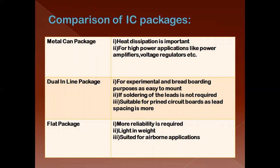Coming to the comparison of IC packages — the metal can package is preferred whenever heat dissipation is important, such as for high power applications like power amplifiers and voltage regulators. The dual inline package is preferred for experimental and breadboarding purposes because it is easy to mount. Soldering of the leads is not required, and it is suitable for printed circuit boards as the lead spacing is adequate. The flat package is used when more reliability is required, and it is light in weight and suitable for low-voltage applications.